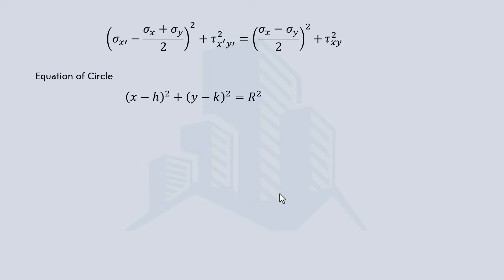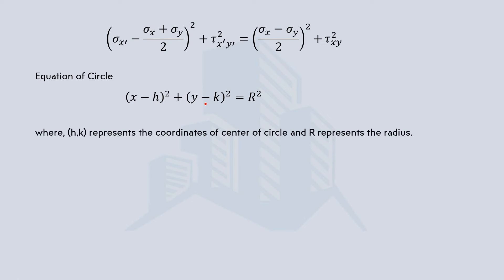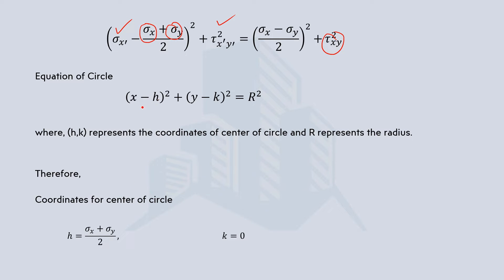Using this equation, if you recall the equation of a circle in the x-y plane where h and k are the coordinates of the center and r is the radius, we can relate the two equations. In our derived equation, the variables are the stress components we want to calculate, and the constants are sigma_x, sigma_y, and tau_xy — values that are given to us. Correlating the two, h equals the average normal stress term.